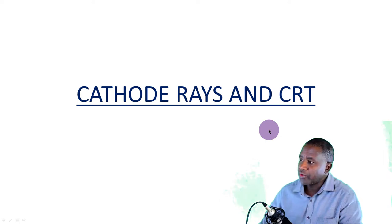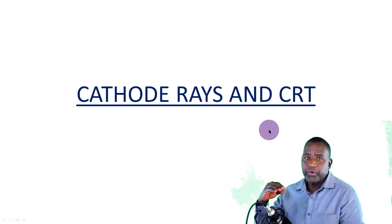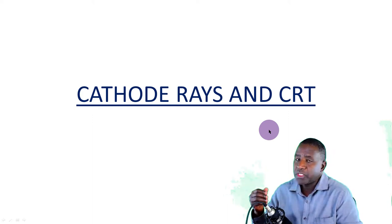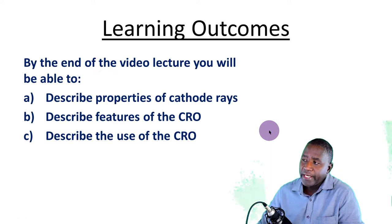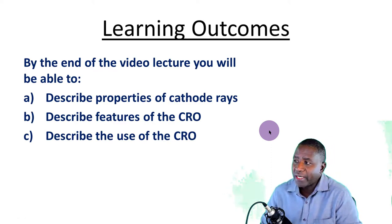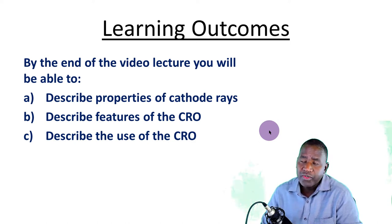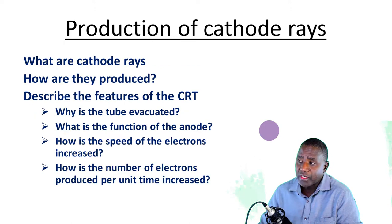This topic is about cathode rays and the cathode ray oscilloscope. Before we go to the cathode ray oscilloscope, which is the final section, we would like to look at cathode rays and the cathode ray tube. By the end of this video lecture you will be able to describe properties of cathode rays, describe features of the cathode ray oscilloscope, and describe the use of the cathode ray oscilloscope.